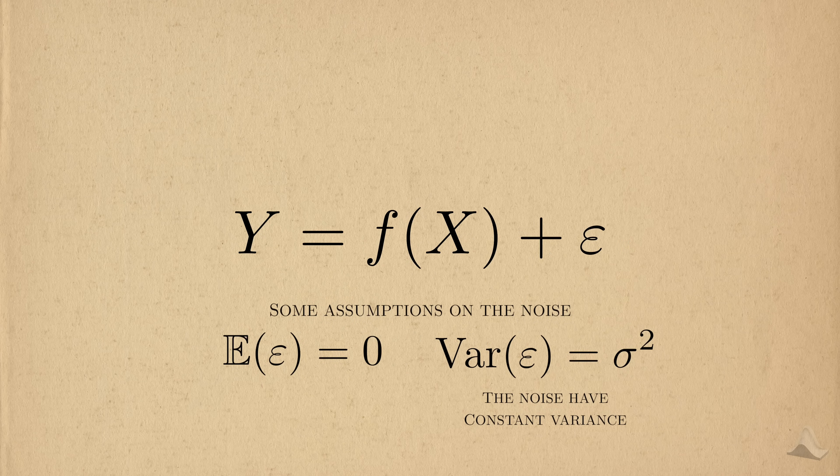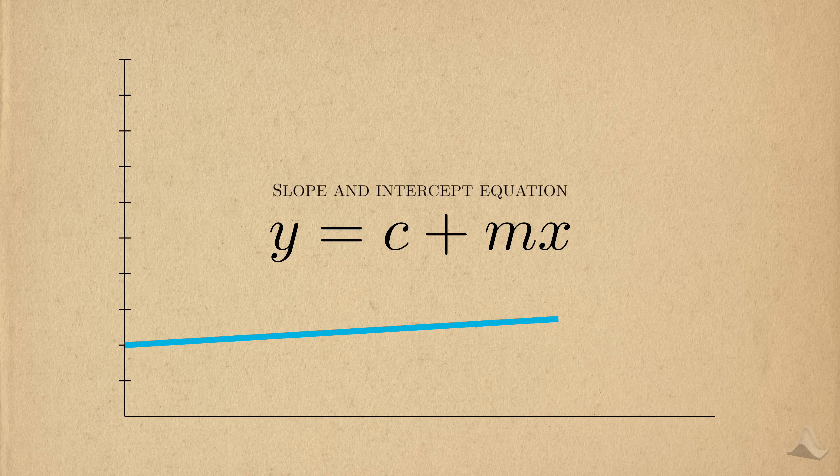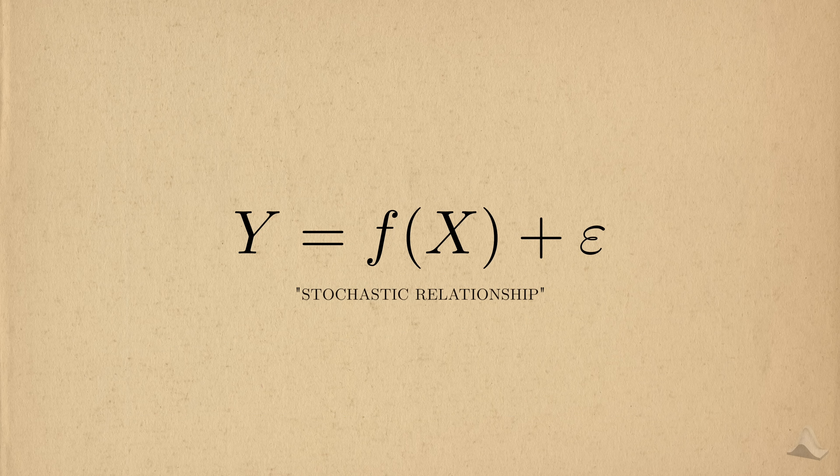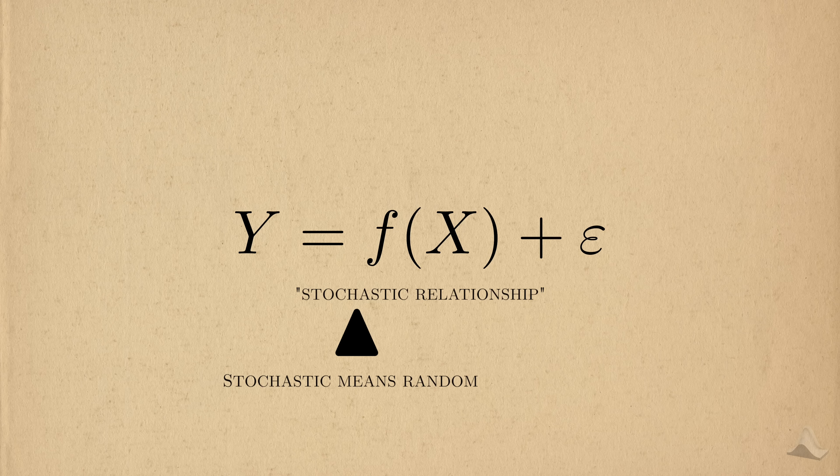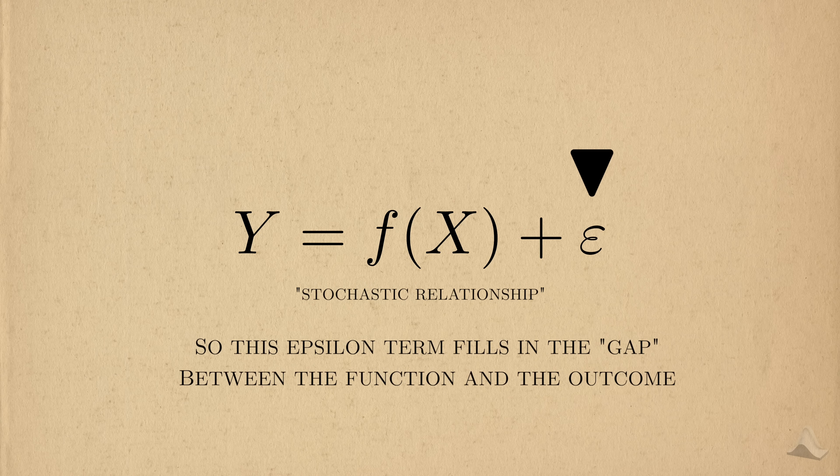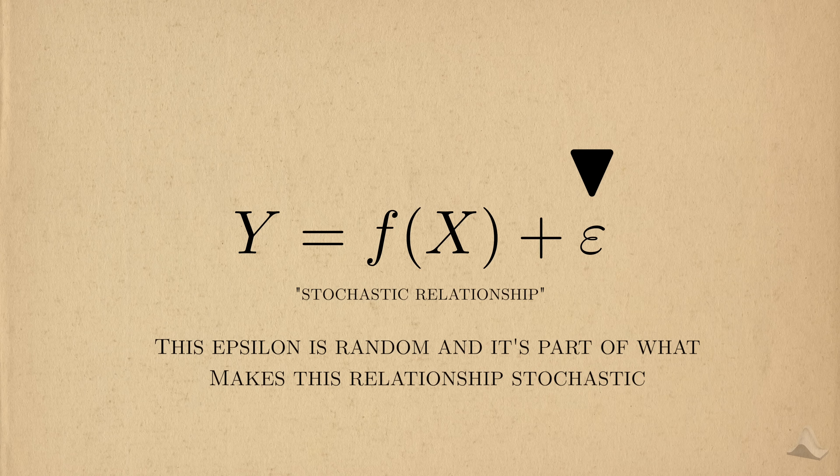It's just some number. Unlike the slope and intercept model that we learn in school, which is a deterministic relationship, linear regression represents a stochastic relationship. Stochastic is nerd speak to describe something that's random. If we plug in a value for x into f, it won't exactly match the value of the outcome. So this epsilon term helps to fill in the gap. This epsilon is random, and it's what makes this relationship stochastic.